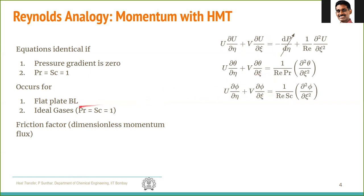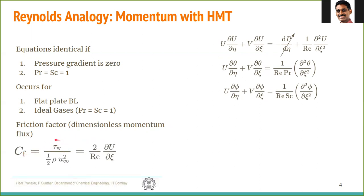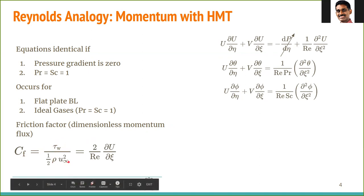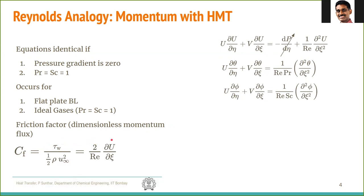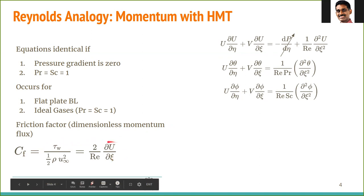Similar to the Nusselt and Sherwood numbers as dimensionless heat and species flux, the dimensionless momentum flux is called the friction factor, which you may have studied in fluid mechanics. The friction factor C_f is defined as the wall shear stress divided by half ρu_∞². Writing wall shear stress as a gradient of local velocity and expressing in terms of dimensionless variables u and ξ, and because of the factor of one-half, we get C_f equals 2/Re times the gradient in the dimensionless variable.